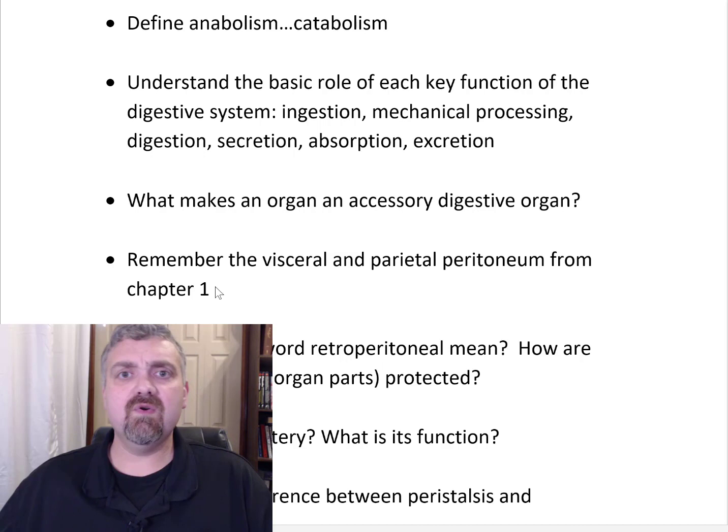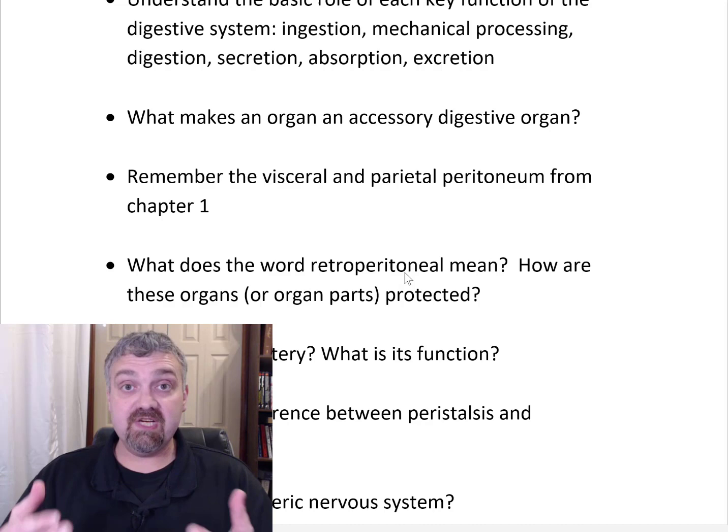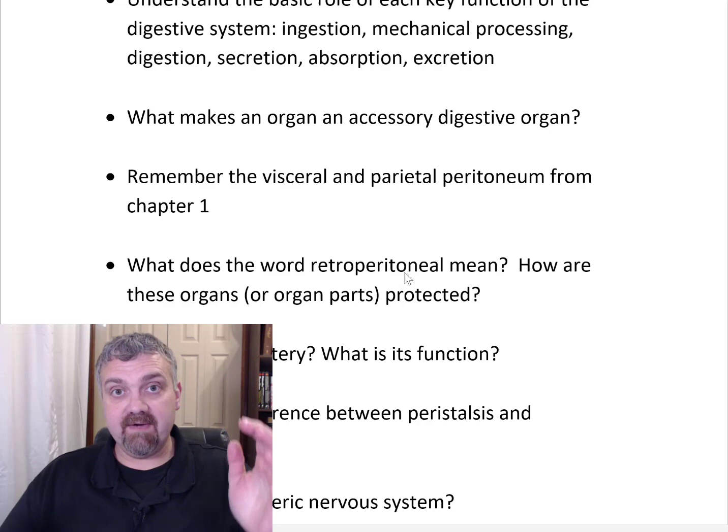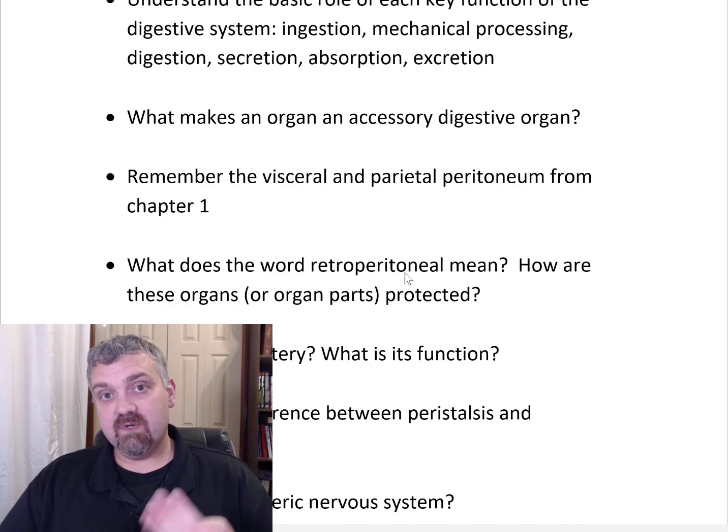What makes an organ an accessory digestive organ? Your digestive system has two parts: your alimentary canal or GI tract — the hollow tube running from your mouth to your anus — and everything else, which are accessory digestive organs. They're not part of that tube, but they're critically important. Key accessory digestive organs include the salivary glands, the liver, gallbladder, and the pancreas.